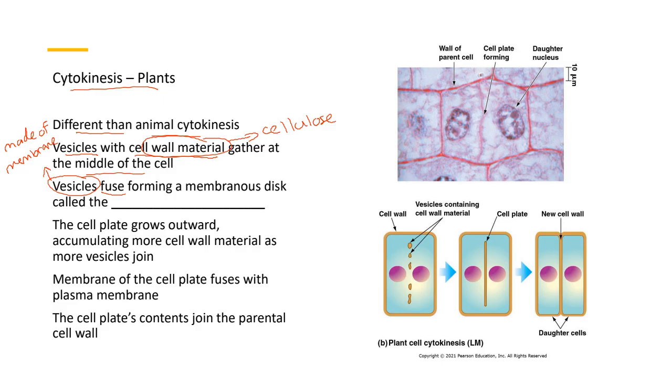So this vesicle fuse forming a membranous disc called the cell plate. So the cell plate is pretty much made of membrane. As the cell grows outward, accumulating more cell wall material, again, cell wall material is going to be cellulose. As more vesicles join in. So the membrane of the cell plate fuses with the plasma membrane eventually, and then the cell plate's contents join the parental cell wall.